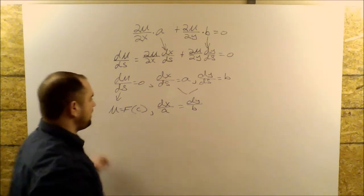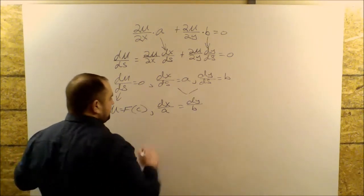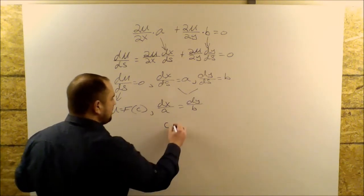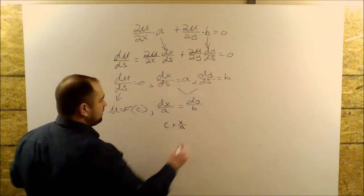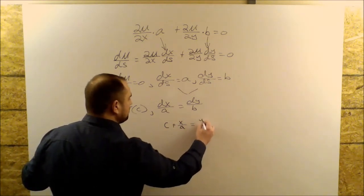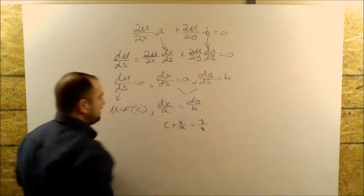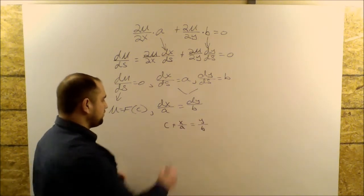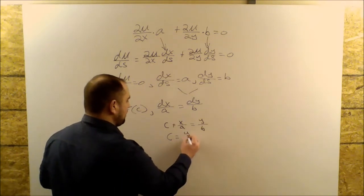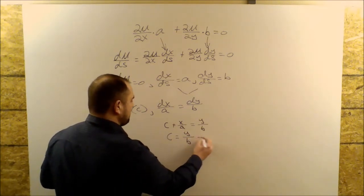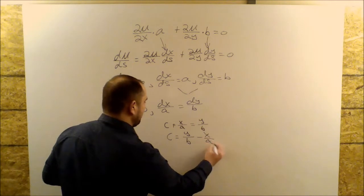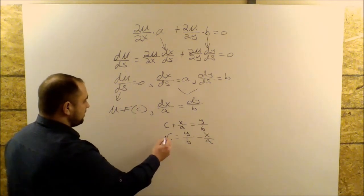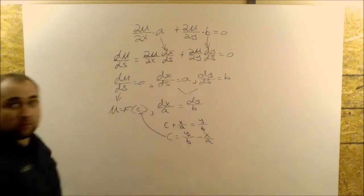Through integration, I get C plus X over A is equal to Y over B. Right here. So solving for C, I get Y over B minus X over A, and this is the constant that we're looking for.